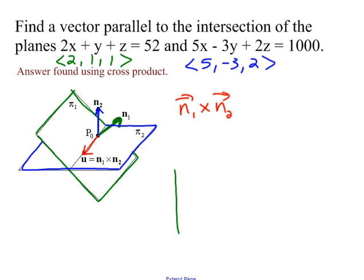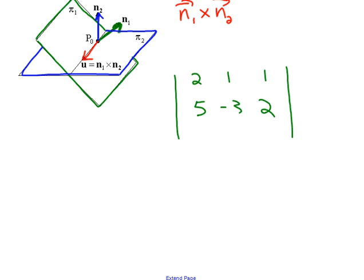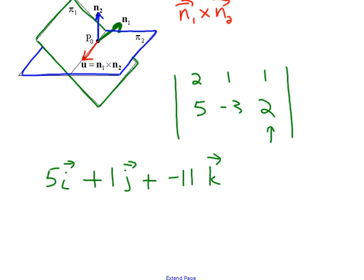Computing n₁ × n₂ with vectors ⟨2, 1, 1⟩ and ⟨5, −3, 2⟩: the i component is 2 − (−3) = 5i. For j, I take the opposite of (4 − 5) = −1, giving +1j. For k, I get −6 − 5 = −11k. So n₁ × n₂ = ⟨5, 1, −11⟩, which is a vector parallel to the intersection of the two planes.